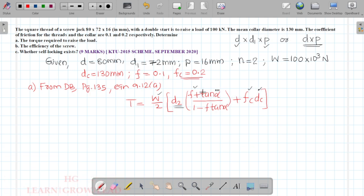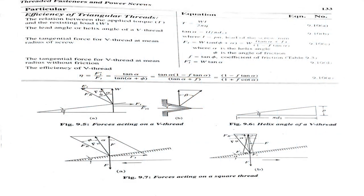Plus fc into dc. The d2 value is d minus p by 2, so d minus 16 by 2, which comes to 72 mm.